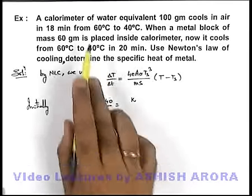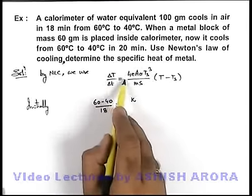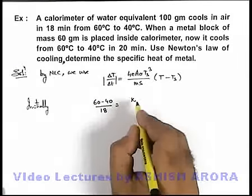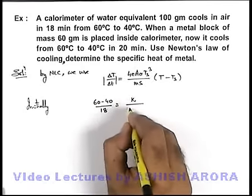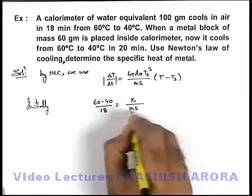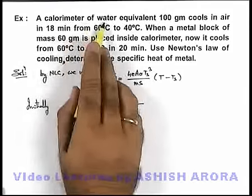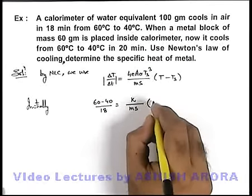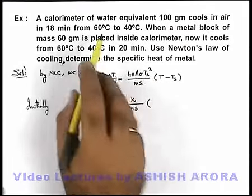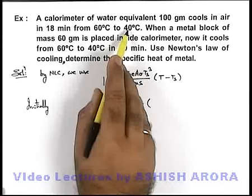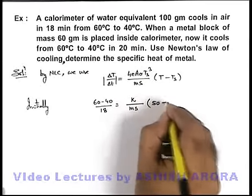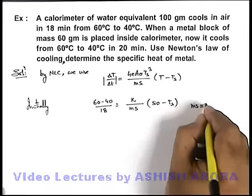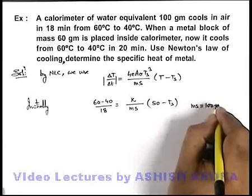So we can substitute just a constant k over here. Always remember that as we are analyzing it numerically, we are not substituting the negative sign as we are taking the magnitude of rate of cooling. So in this situation it will be k upon ms. ms is obviously for the calorimeter and its water equivalent is 100 grams, so we must take this ms to be 100, multiplied by average temperature as it cools from 60 to 40. So average temperature we can take as 50 minus T_s.